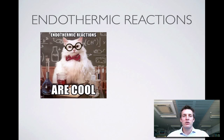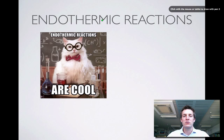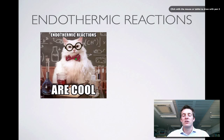Moving on to the other type: endothermic reactions. A common example is the reaction that takes place in an ice pack when you activate one. An endothermic reaction can be viewed as the opposite of an exothermic reaction — it's one where heat enters the system. Heat is absorbed and converted into potential energy, so the surroundings lose heat. If we held this reaction, we'd notice it getting colder because heat from our hands would flow into the system. The temperature drops, which is why endothermic reactions are cool.